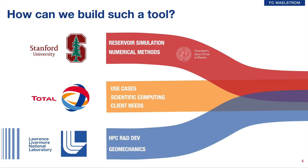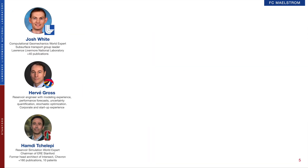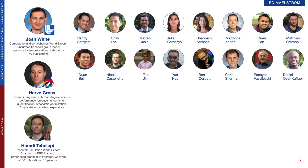But of course, it's not institutions that work together to build such a shared code — it is people. If we start with the principal investigators, here we have Joshua White at Lawrence Livermore National Lab, Hamdi Cellepe at the Energy Resources Engineering Department of Stanford University, and myself. Here at the top, you see the team at Lawrence Livermore National Lab. We have about 15 people working on this project, and I want to highlight here Randy Sedgast, who is the main architect of this code.